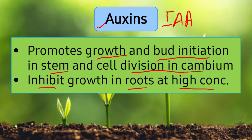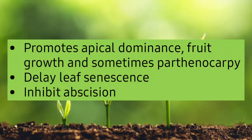The function of auxins with respect to root and shoot was also covered in the previous chapter — it is the reason shoots and roots show geotropism: negative in shoots and positive in roots. Auxin also promotes apical dominance, meaning it strengthens the tip region of the stem and continuously increases cell number there, causing the stem length to keep increasing.